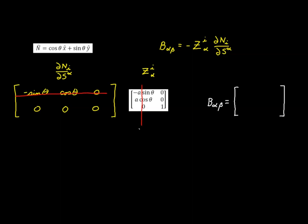Using this row and this column, we multiply negative sine theta times negative a sine theta, giving a sine squared theta. Then this element times this one gives a cosine squared theta, and the last element times this one is just zero. Combining these together, we factor out a and are left with sine squared plus cosine squared, which equals 1. So the result is just a, and applying the negative sign from our formula, our first element is negative a.